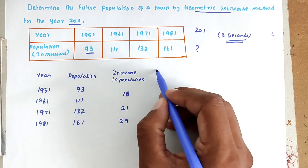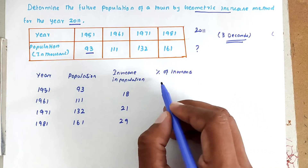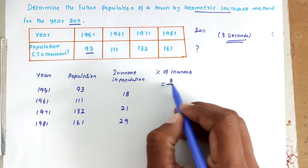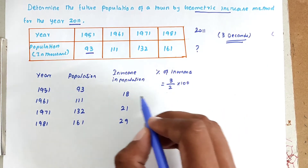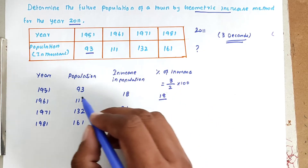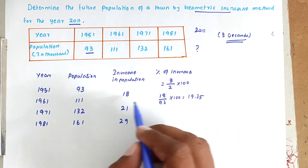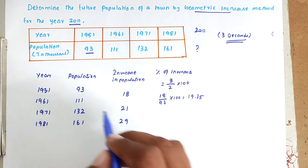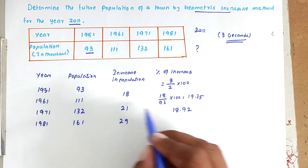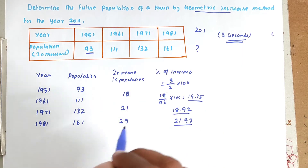Now we have to find out the percentage increase, that is the growth rate. The formula is column 3 divided by column 2 into 100. So 18 divided by 93 into 100 gives 19.35. Then 21 divided by 111 into 100 gives 18.92. Next, 29 divided by 132 gives 21.97. These are the percentage increase values.